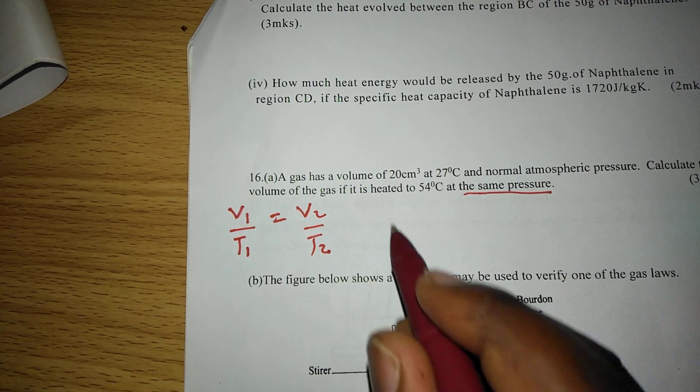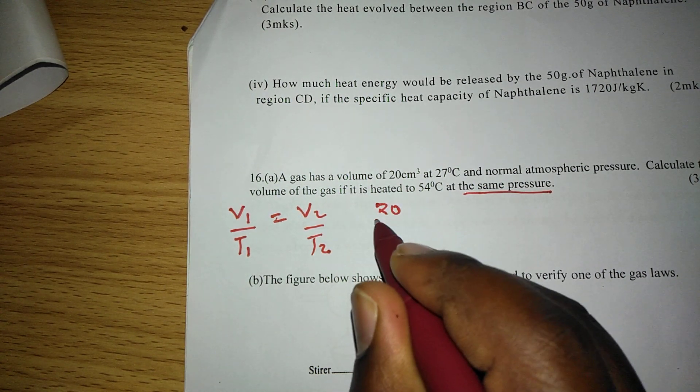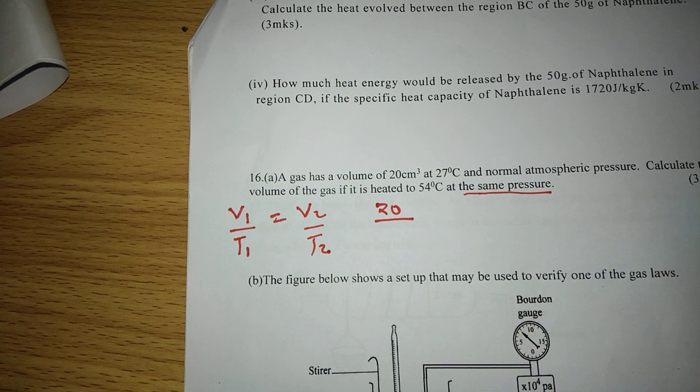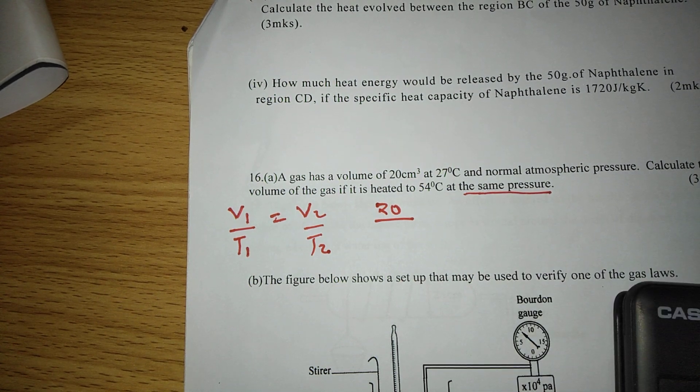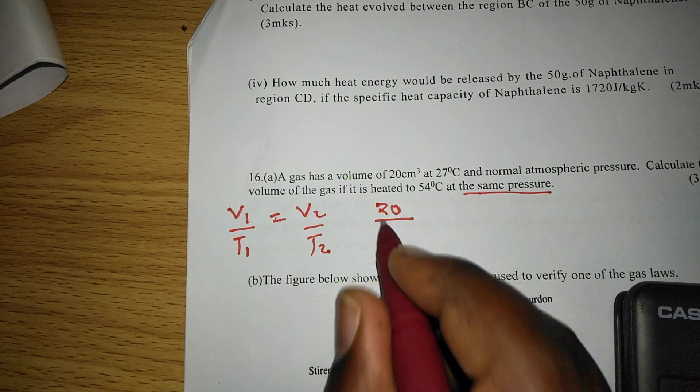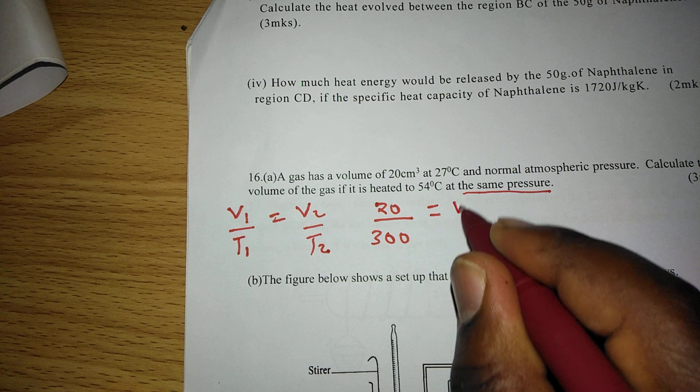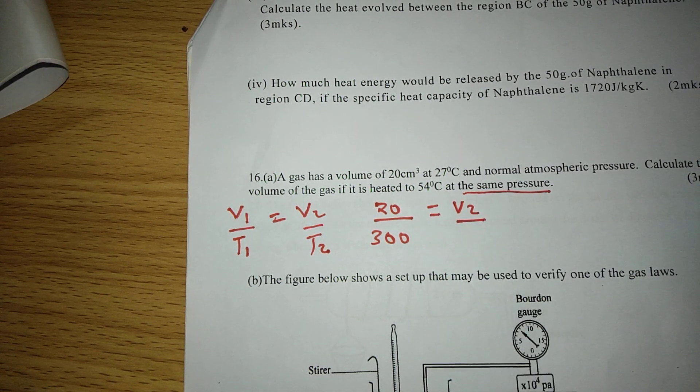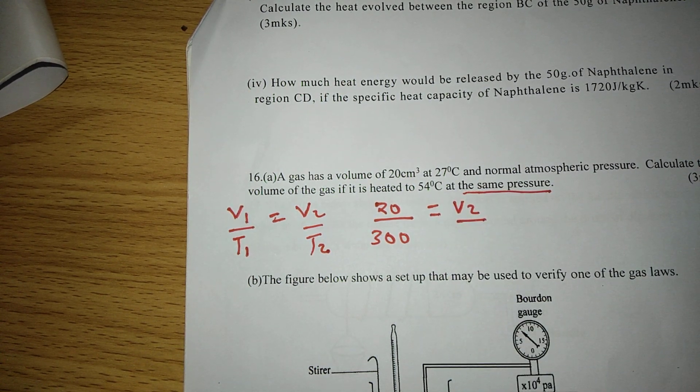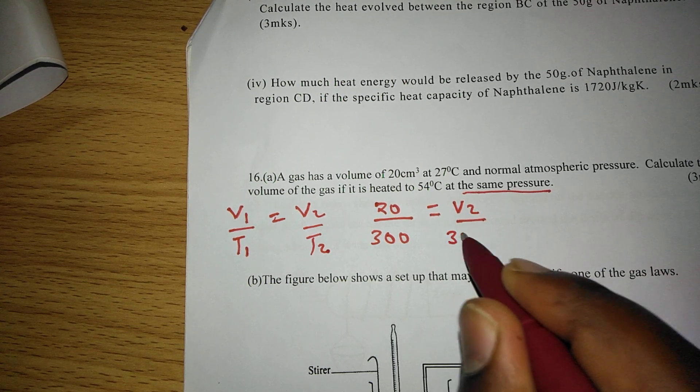So in this case, we have the first volume 20 divided by the first temperature, which has to be changed to the Kelvin scale. So 27 plus 273, giving us 300. This is equal to the volume, which is not known, but it is heated to 54. So 54 plus 273, so that we may change it to the Kelvin scale, 327.